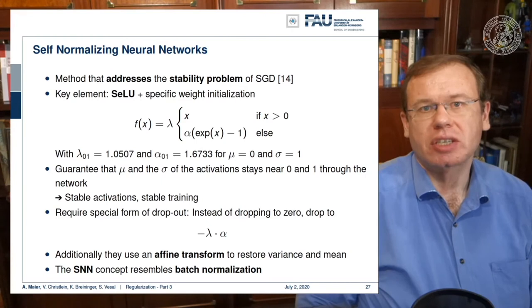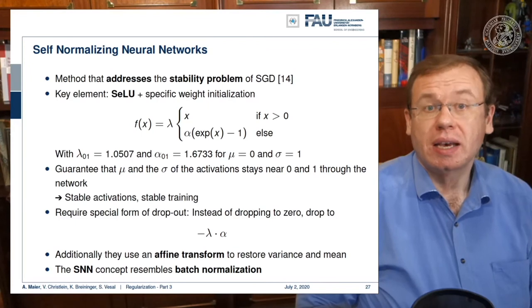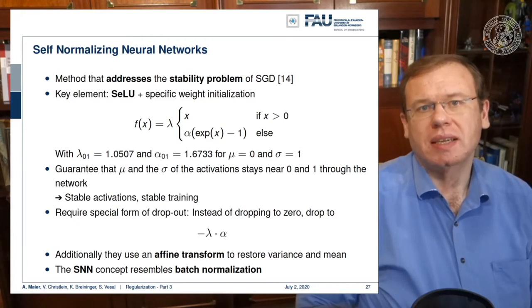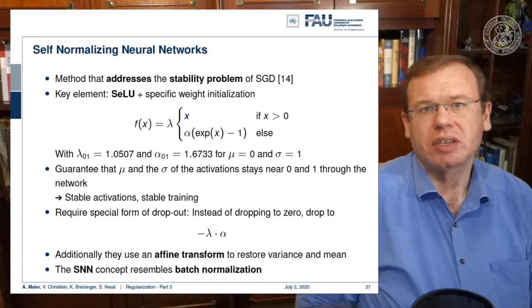One thing that has to be changed is the dropout procedure, which we'll look at next. Here, instead of dropping to zero, you will have to drop to minus lambda times alpha. Additionally, they use an affine transformation to restore the variance and the mean. So the self-normalizing network concept to some extent also resembles batch normalization. Interestingly, it also leads to an increased stability and it's also a good recipe that you may want to consider when building your neural networks.